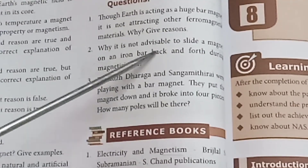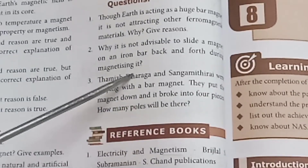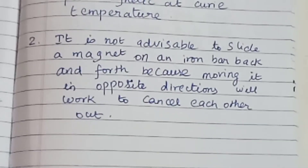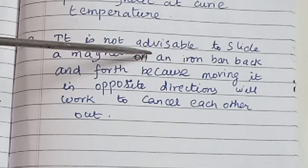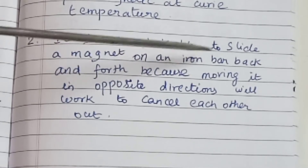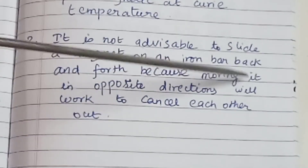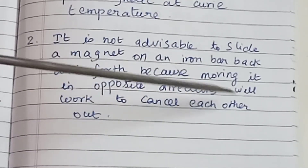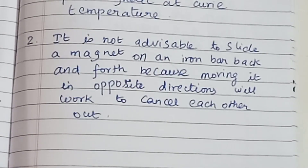Question 2: Why is it not advisable to slide a magnet on an iron bar back and forth during magnetizing? Answer: It is not advisable to slide a magnet back and forth because moving it in opposite directions causes the magnetic effects to cancel each other out.